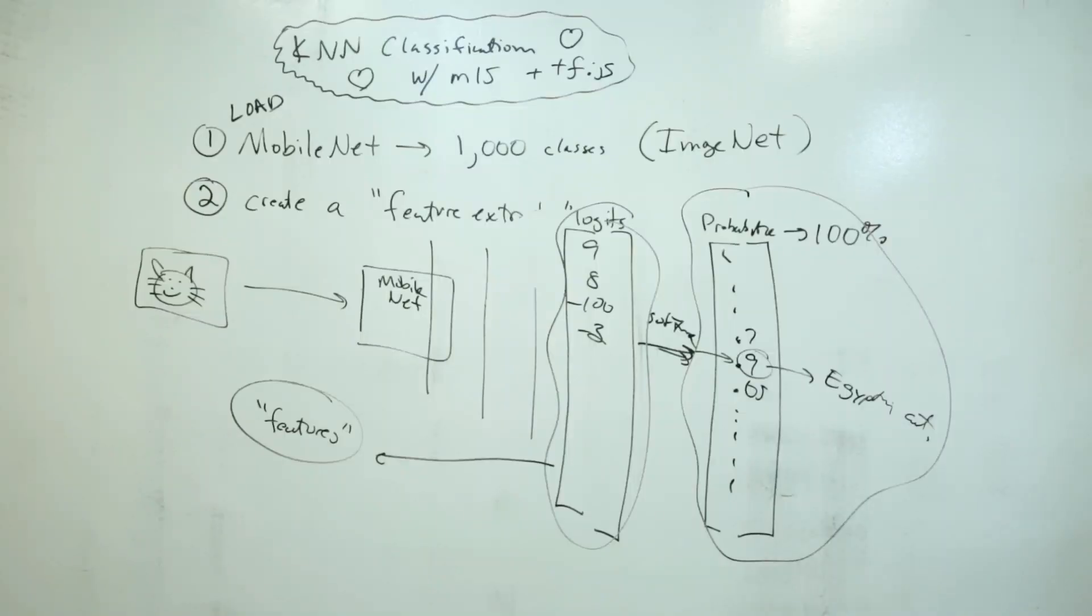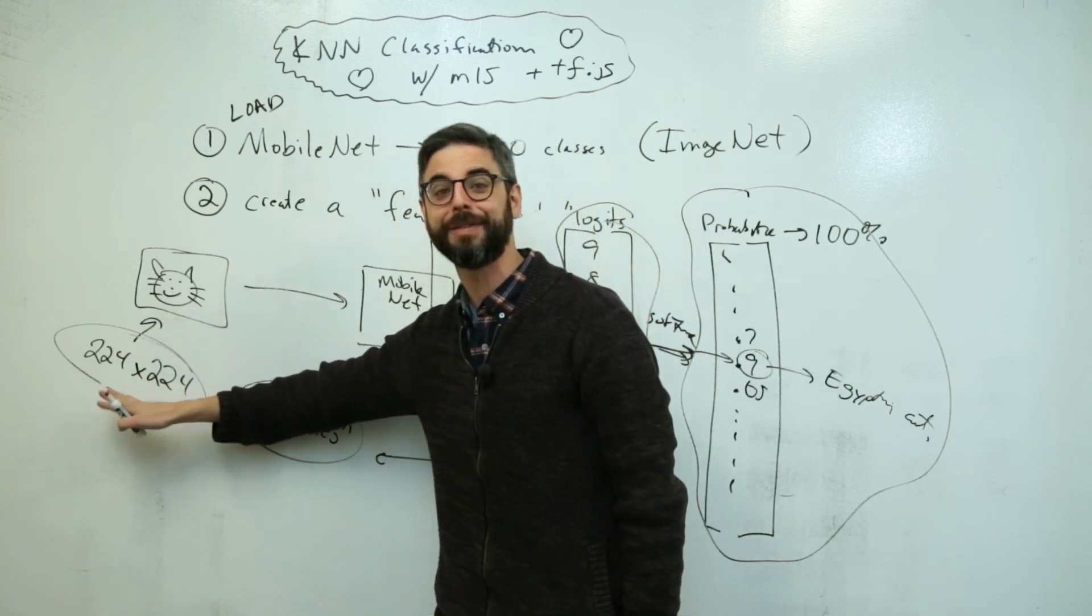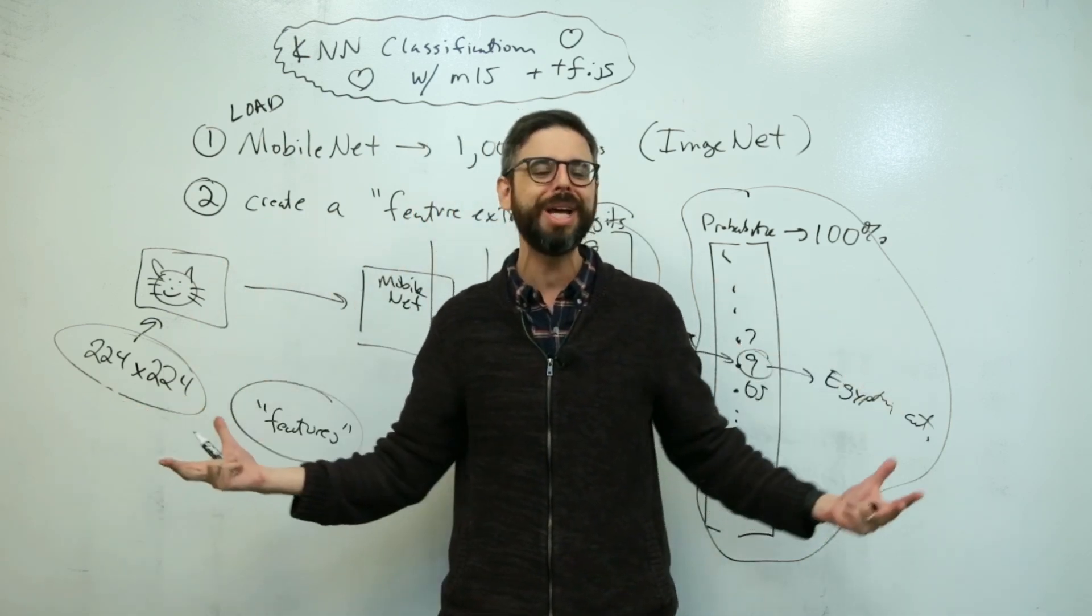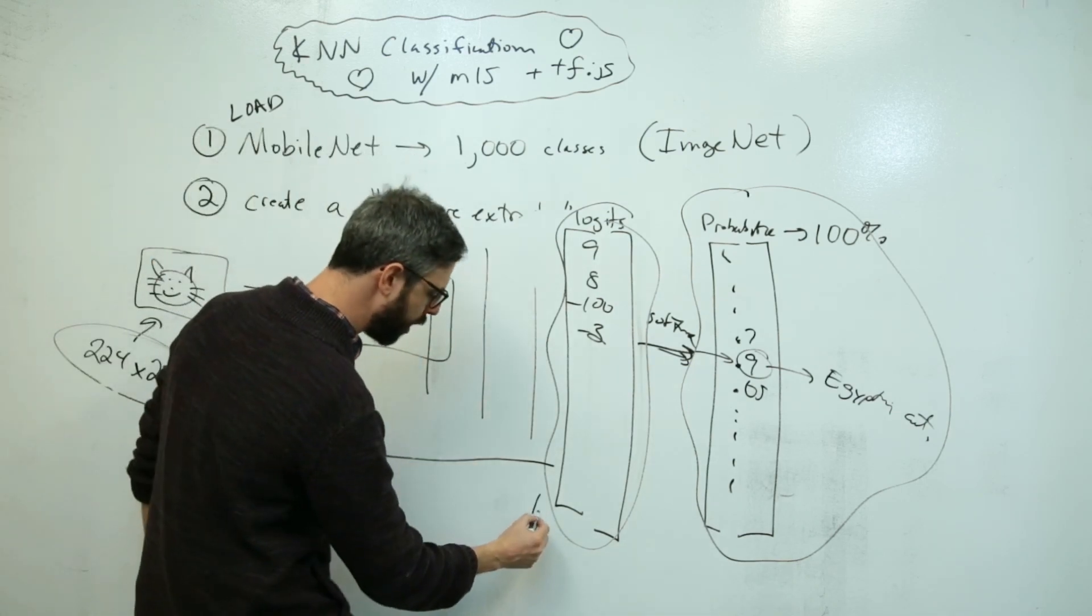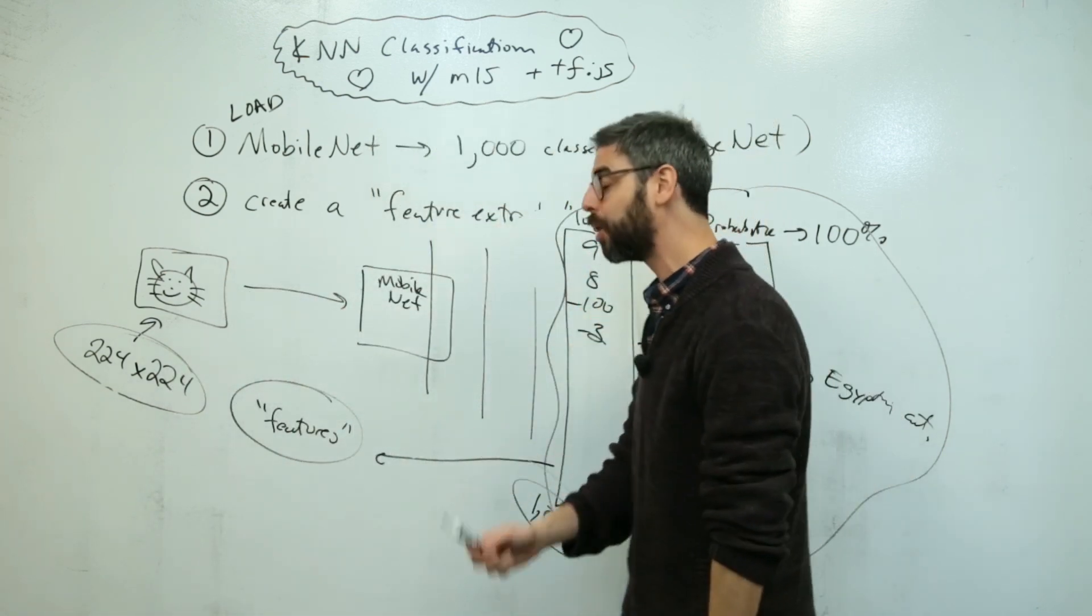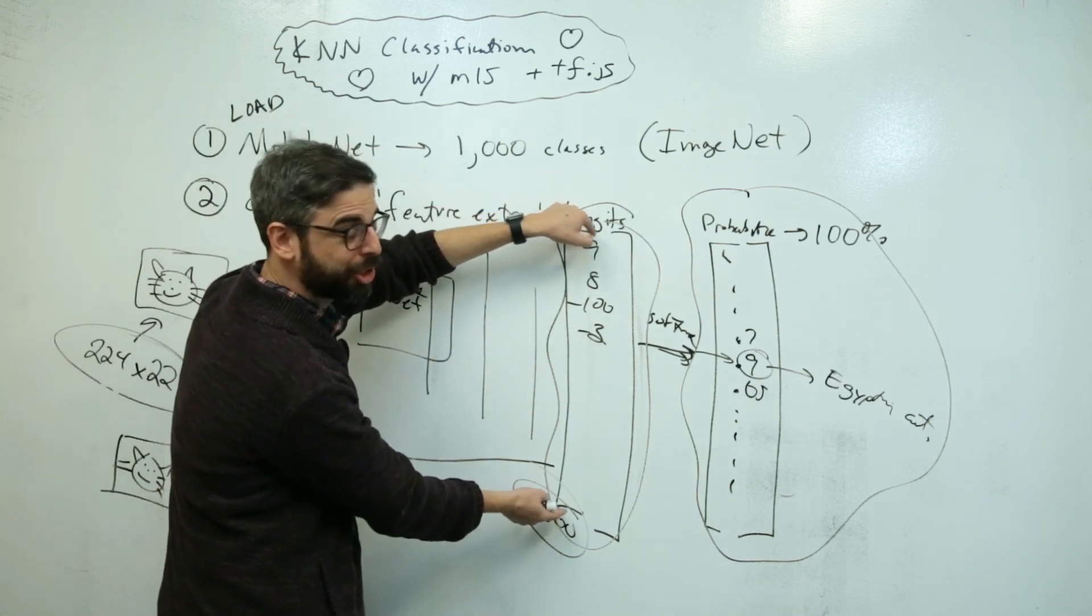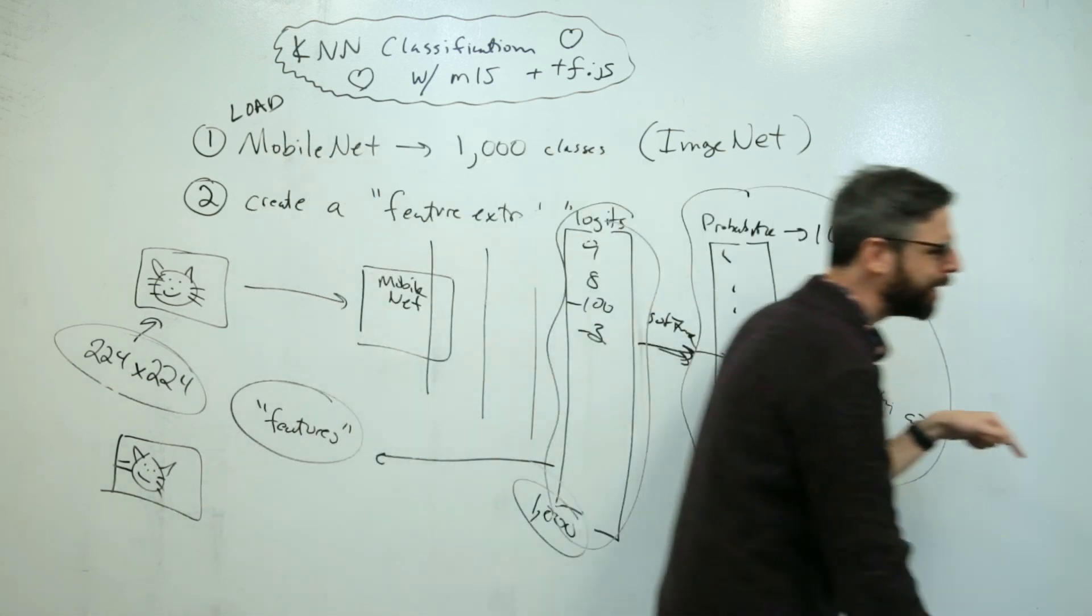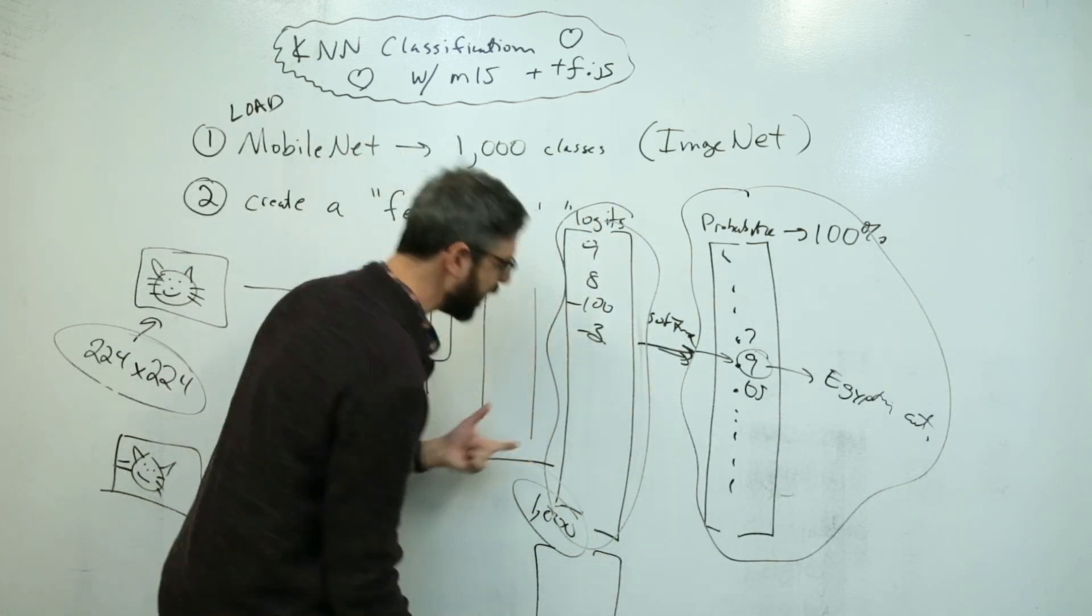An image itself, let's say 224 by 224 pixels, is like a lot of numbers. This is the literal numeric representation, all the RGB values of every single pixel. But that's too many numbers to work with and compare. This pre-trained model has already learned how to boil it down to just 1,000 numbers. If we have 1,000 numbers, we can start to compare this image to another image.